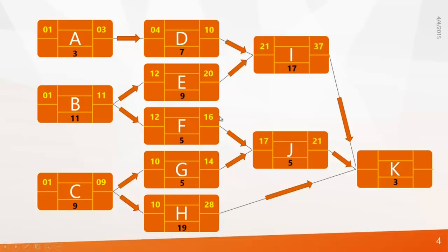So Early Finish for I is 37 and for J is 21. Now at the fourth and final level, Activity K is waiting for I, J, and H to complete. The longest value is 37, so Early Start of K is 38, and Early Finish of K is 40. Since K is the last activity, the project will finish on Day 40. This method of calculating Early Start and Early Finish is called the Forward Pass.